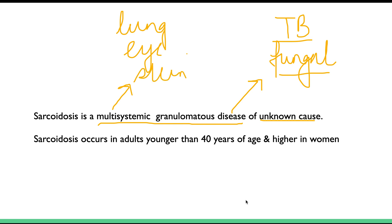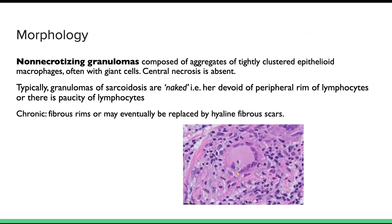Sarcoidosis occurs in adults, mostly younger than 40 years of age — between 20 to 40 years — and it is higher in women. In this video we will discuss the morphology, the organs involved in sarcoidosis, and the pathogenesis behind it.